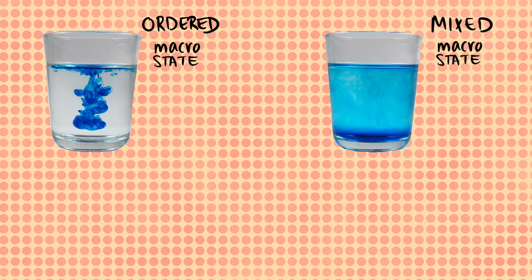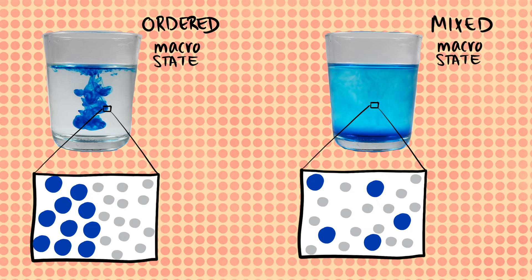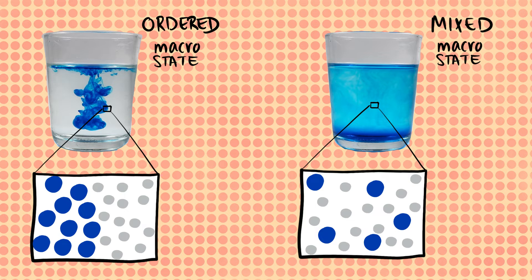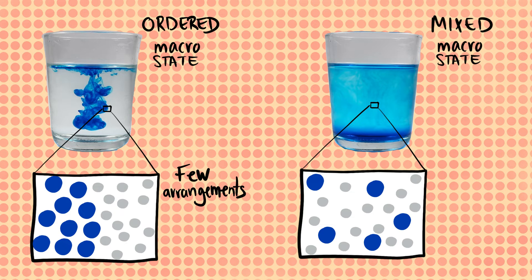Consider two snapshots — one in which the system is in an ordered macroscopic state, and a second one in which the system is completely mixed. To grasp the meaning of entropy, let's zoom in and look at the system as a large collection of tiny particles: water molecules and pigment particles. In the initial ordered state, if we swap either two pigment particles or two water molecules, the overall order of the system is not affected. However, we cannot swap a pigment with a water molecule without making the system more mixed. So in the ordered state, there are relatively few rearrangements of the particles that can keep the large-scale order. As entropy measures the number of such possible rearrangements, ordered states have low entropy.